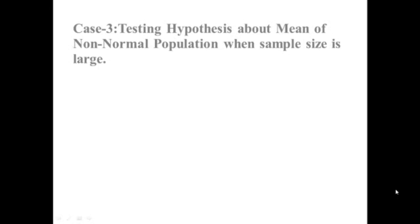Now we will come to Case 3, that is, testing hypothesis about the mean of a non-normal population when sample size is large. If our population is non-normal but sample size is large, then according to the central limit theorem, the sampling distribution of x-bar approaches a normal distribution. In this case, the random variable z will be x-bar minus mu-naught divided by sigma divided by square root of n, when standard deviation is known.